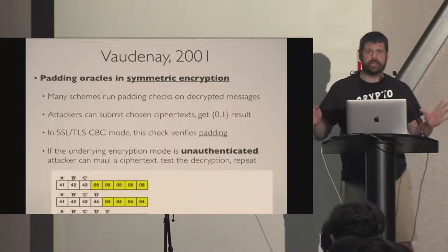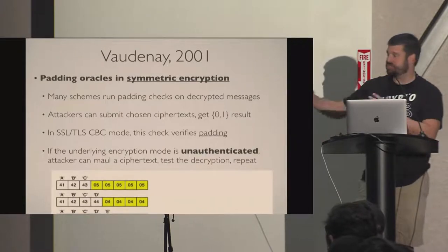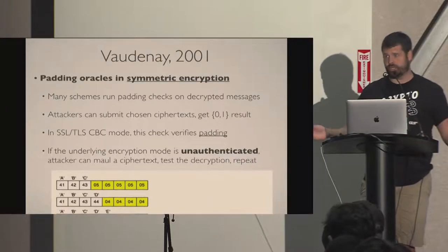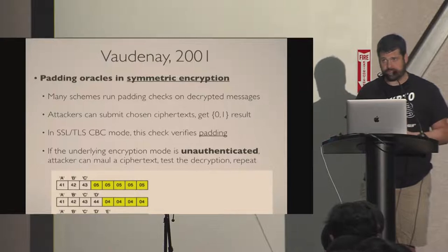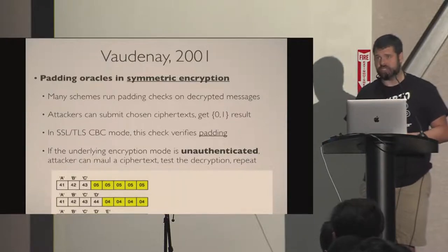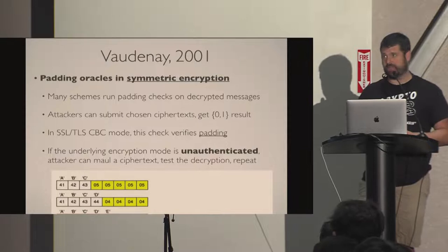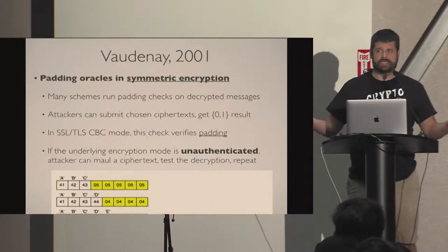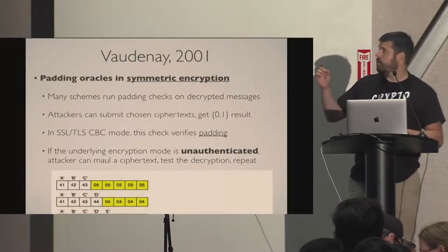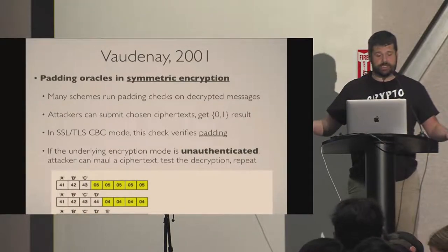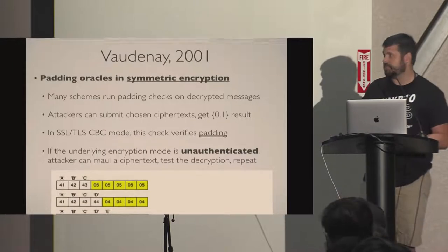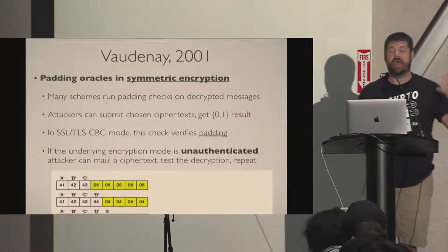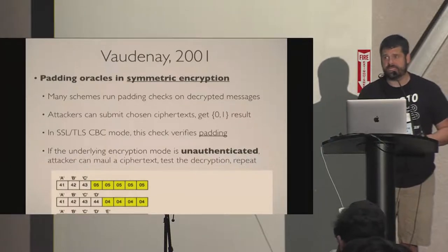The Vaudenay attack basically works on the theory that a lot of schemes and protocols don't use authenticated encryption. There is a padding check function — this was a vulnerability in SSL but is all over the place — that will give you back some signal, say a 0 or a 1, depending on whether the padding checks out in a decrypted ciphertext. If the ciphertext is not authenticated, we can exploit this to do useful things. It's a very famous old attack, and amazingly still exists today in 2019.